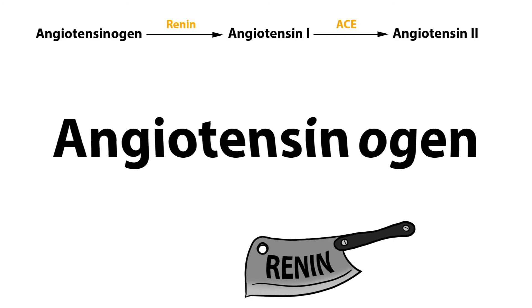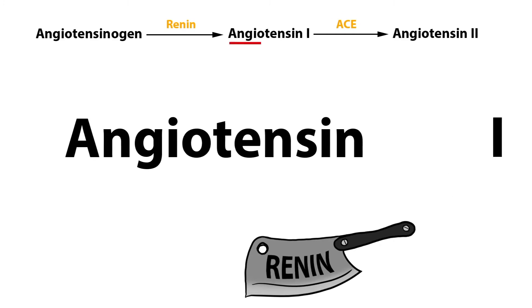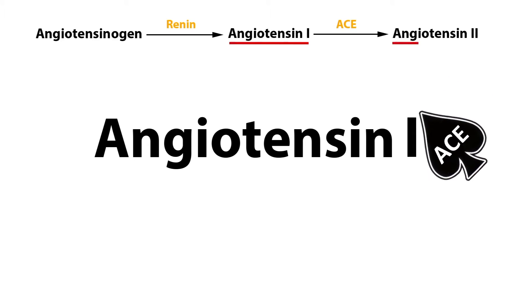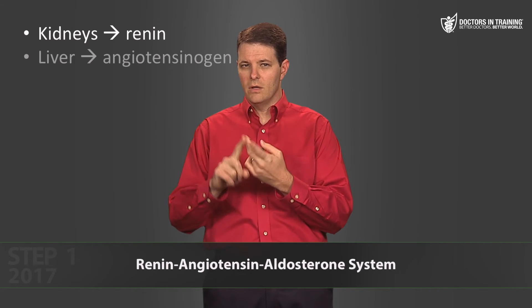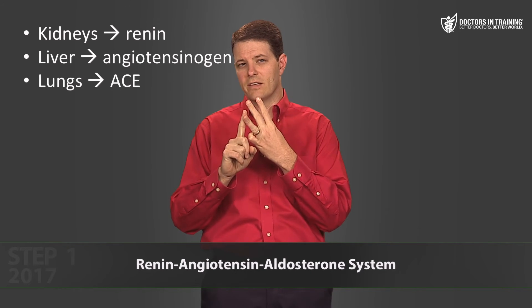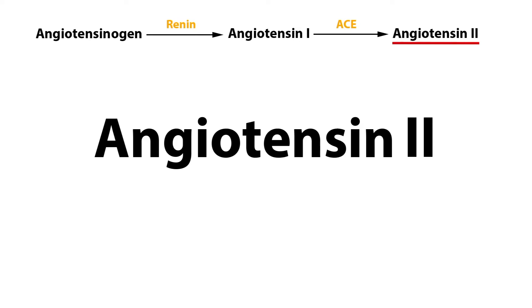Angiotensin-converting enzyme (ACE), produced in the lungs and kidneys, converts angiotensin I to angiotensin II. Three organ systems are already involved: the kidneys making renin, the liver making angiotensinogen, and the lungs making ACE.